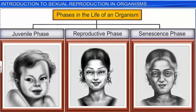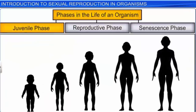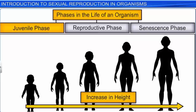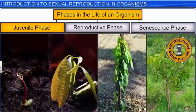All organisms go through three phases of life: the juvenile phase, reproductive phase, and senescence phase. The juvenile phase is a period of growth, characterized by an increase in height in all animals, including human beings. Whereas in plants, we see the emergence of new leaves during the juvenile phase. In plants, the juvenile phase is known as the vegetative phase.